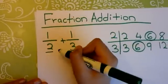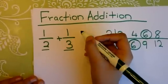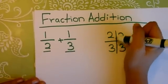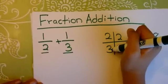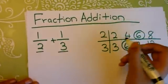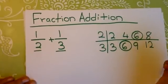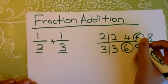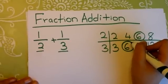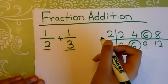The first thing you have to do is find the common denominator. What I like to do is find the multiples for these two denominators. So the multiples for 2 are 2, 4, 6, and 8. And the multiples for 3 are 3, 6, 9, and 12. So the common multiple I found is 6. That's going to be our common denominator.